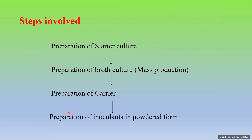If I want to produce Rhizobium biofertilizer, I require a starter culture of Rhizobium. Then the starter culture of Rhizobium is used for mass production of the broth culture of Rhizobium. Then we need a carrier material like peat or lignite or charcoal with which the broth culture of Rhizobium is mixed. And then preparation of inoculants in powdered form — drying the powder, putting it in plastic bag, sealing and all.